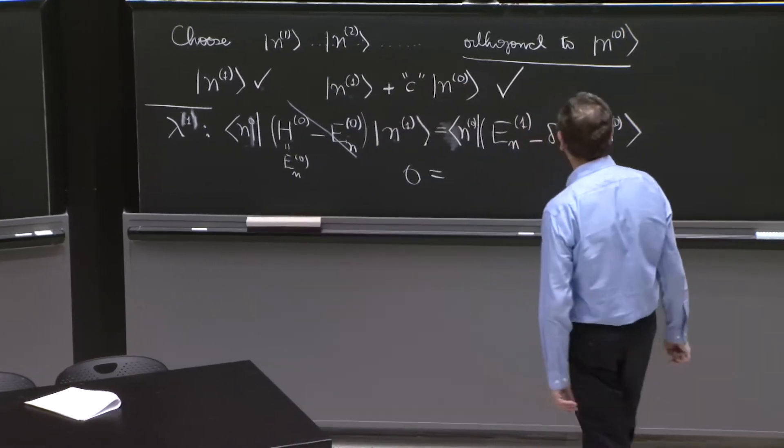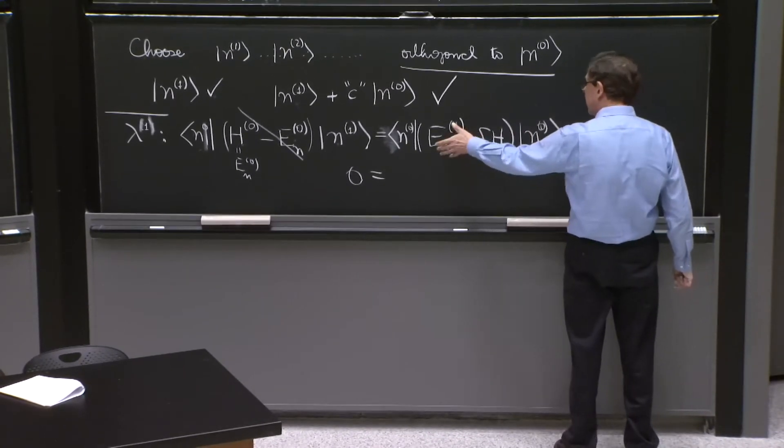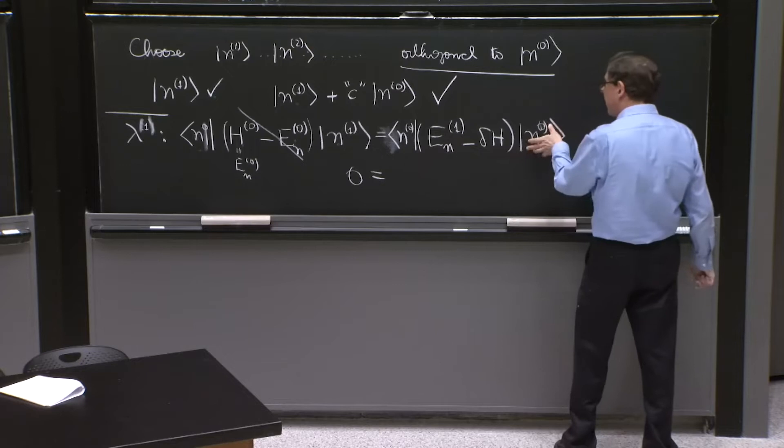The right-hand side, this is a number, En1. It's a number. It's in an expectation value.